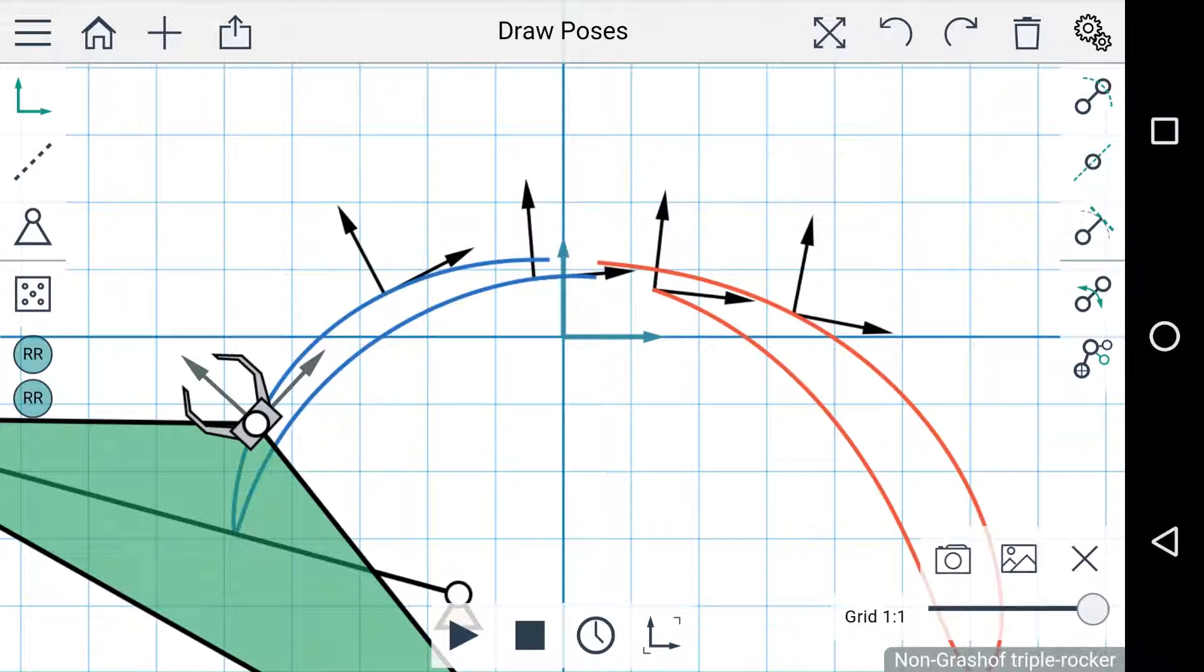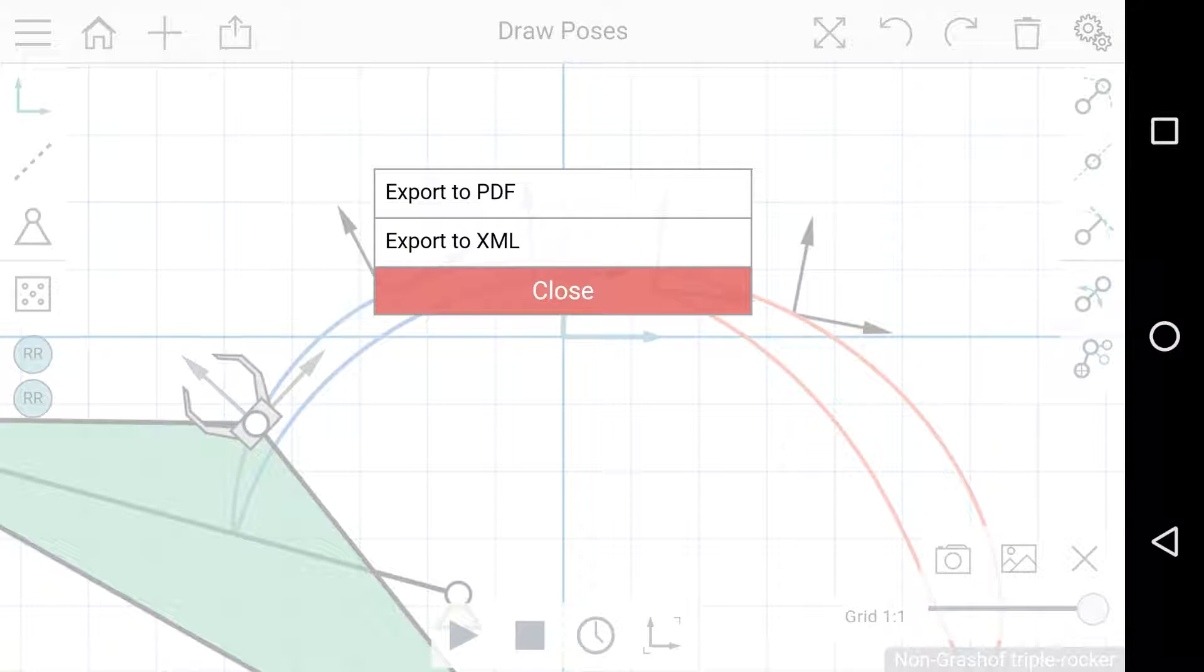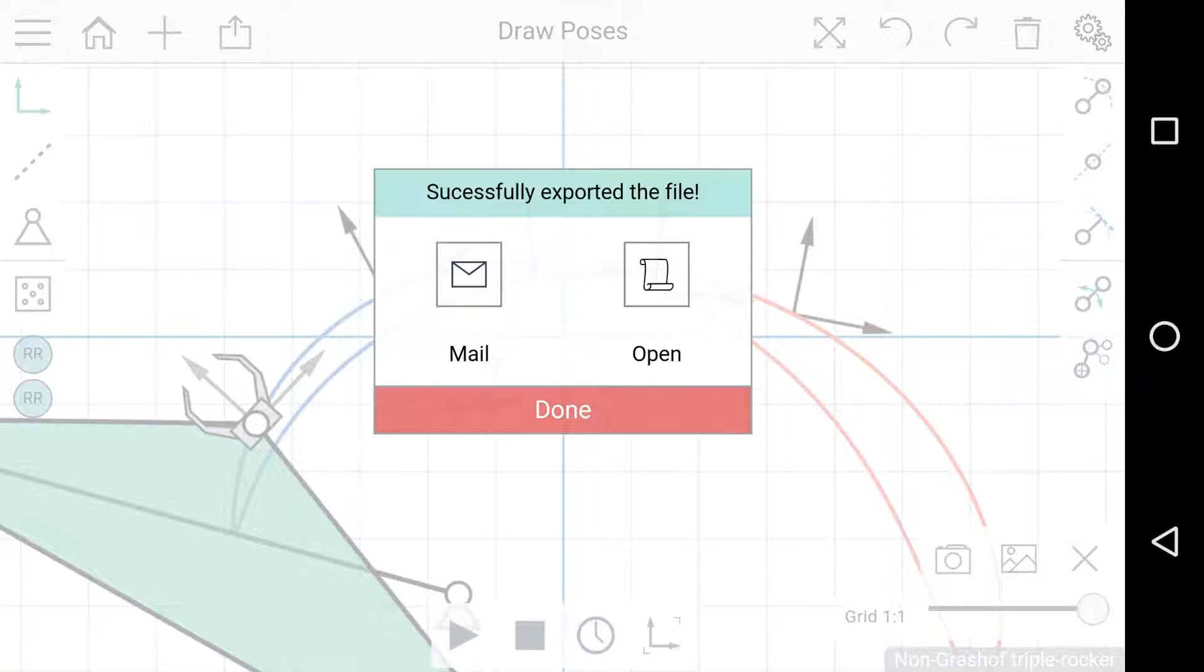On the left side is a button to export your linkage. The XML option isn't very useful at this point, but if you export to PDF you can choose to attach it to an email or open the file to view.